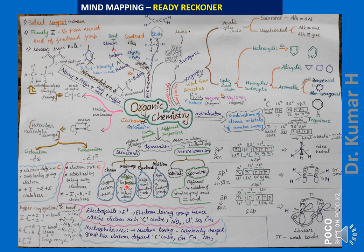Functional isomers have the same molecular formula but different functional groups. For example, CH₃CH₂OH (ethanol, an alcohol) and CH₃OCH₃ (dimethyl ether) are functional isomers. Positional isomers have the same molecular formula and the same functional group but differ in the position of that group. For example, CH₃CH₂CH₂OH (1-propanol) and CH₃CHOHCH₃ (2-propanol) differ only in the position of the OH group.